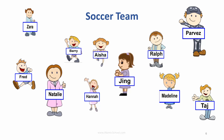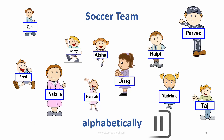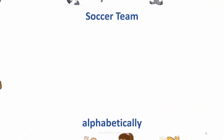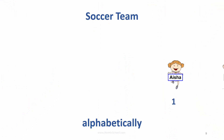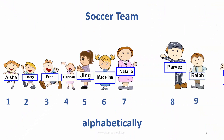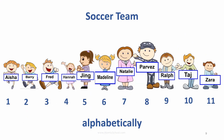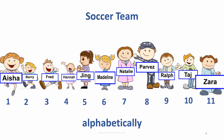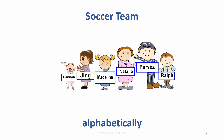One way is alphabetically. Then who would be number one and who would be number 11? Aisha would be number one and Zara would be number 11. What are other ways of lining up?